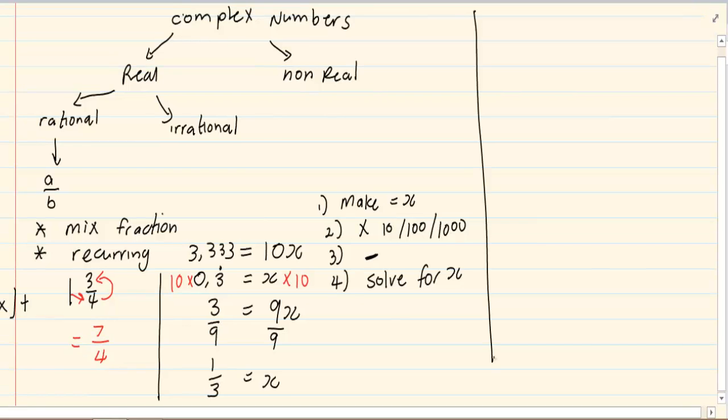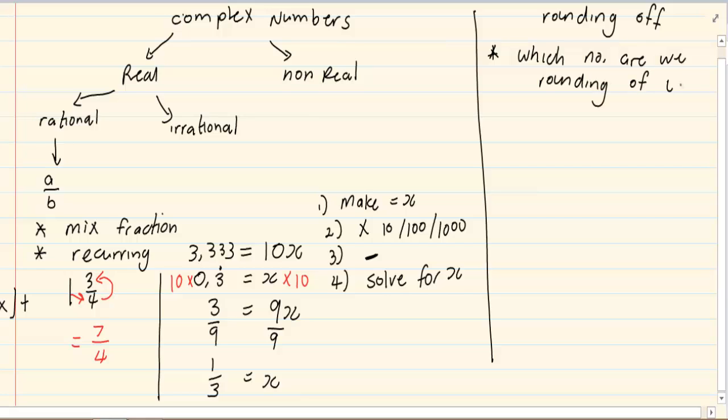When we round off, we must always keep track of which number are we rounding off to. Number 2, look to your right. If it is 0 to 4, it will stay the same. But if it is 5 to 9, we add 1. And lastly, if it is a whole number, remember to keep your zeros.